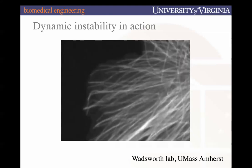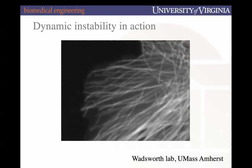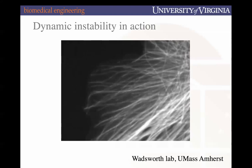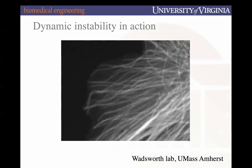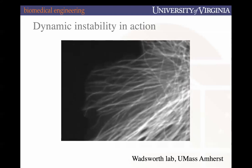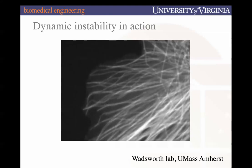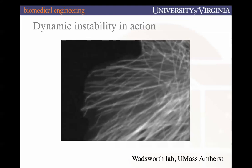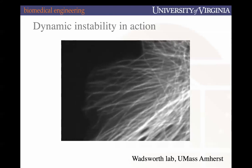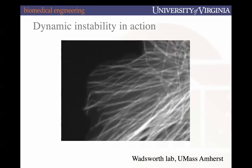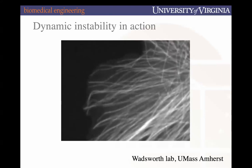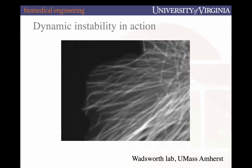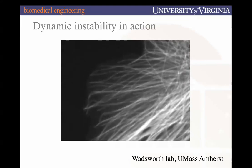Tubulin is part of the cytoskeleton, so it stays within the cell, but its dynamic behavior depends on the cell state and what it's trying to do. There are a couple of key functions we'll talk about later in this lecture — times at which you see really strong tubulin fiber polymerization that is really key, and then it falls apart really rapidly. It's context dependent when you'll see really active tubulin polymerization occurring.